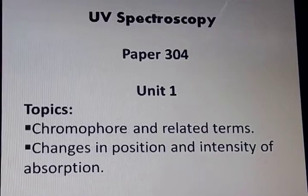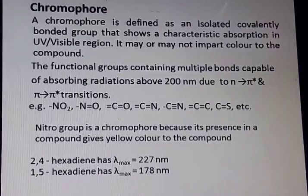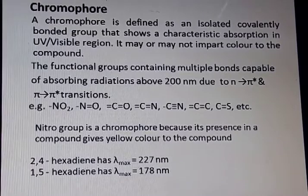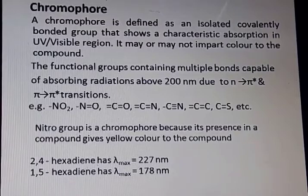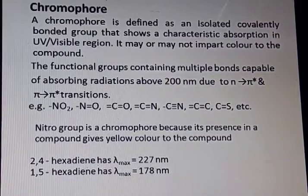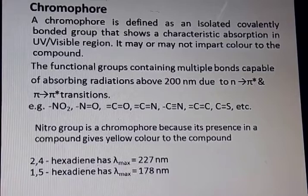UV Spectroscopy, Paper 304, Unit 1. A chromophore is defined as an isolated covalently bonded group that shows a characteristic absorption in the UV visible region, and it may or may not impart colour to the compound. The functional group containing multiple bonds is capable of absorbing radiations above 200 nm due to n to pi star and pi to pi star transitions.